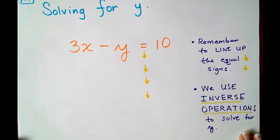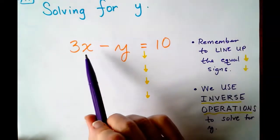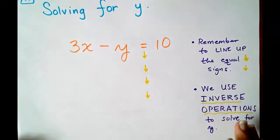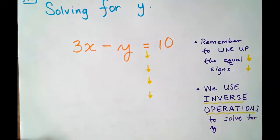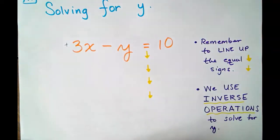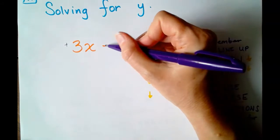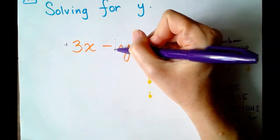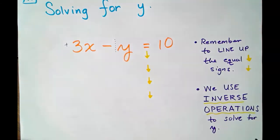So let's get to it. 3X minus Y equals 10. So think about what has been done to the Y. The Y has a positive 3X that we need to undo. And then this minus Y, remember, it means negative 1Y. So those are the two things we have to undo using inverse operations.